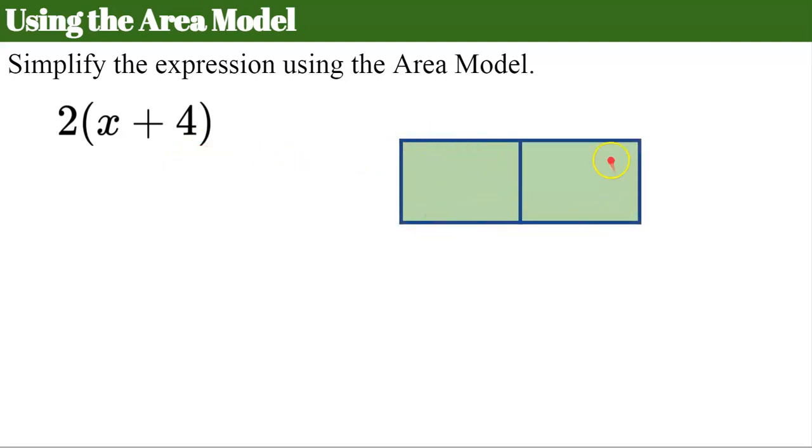So we have a rectangle here that has two parts. I'm going to take the value that I'm distributing, the 2, and what I'm multiplying it with. So I have one addend is x and the other is positive 4. So if we think about this box as being a rectangle and it has a length and of width 2 times x tells me the area is 2x. The second rectangle has this width of 2 and a length of positive 4. So 2 times 4 is 8.